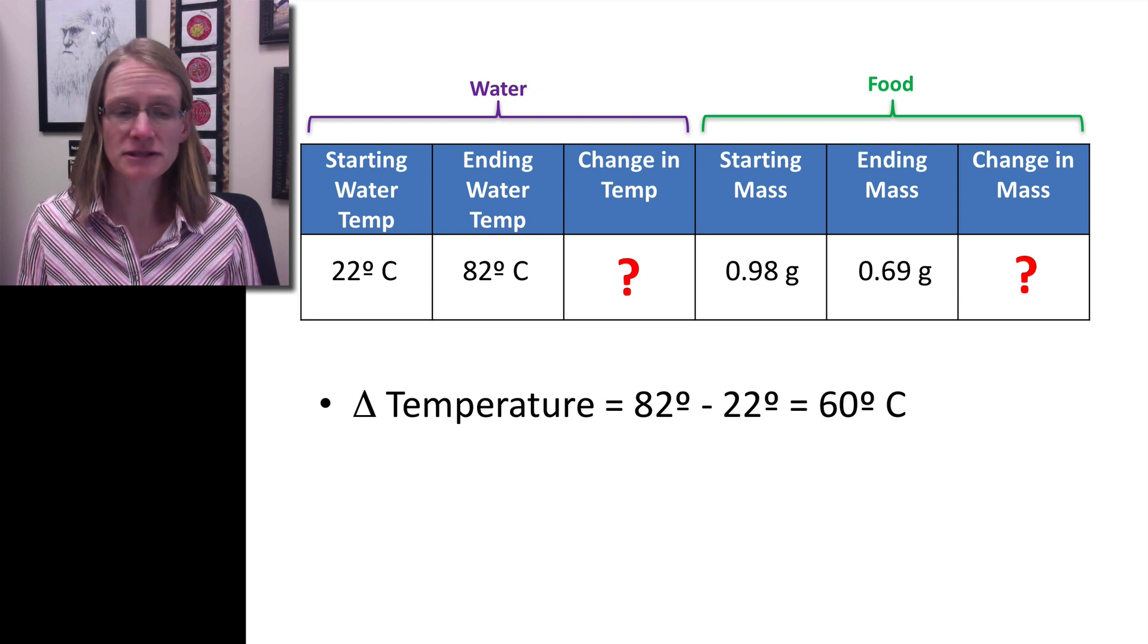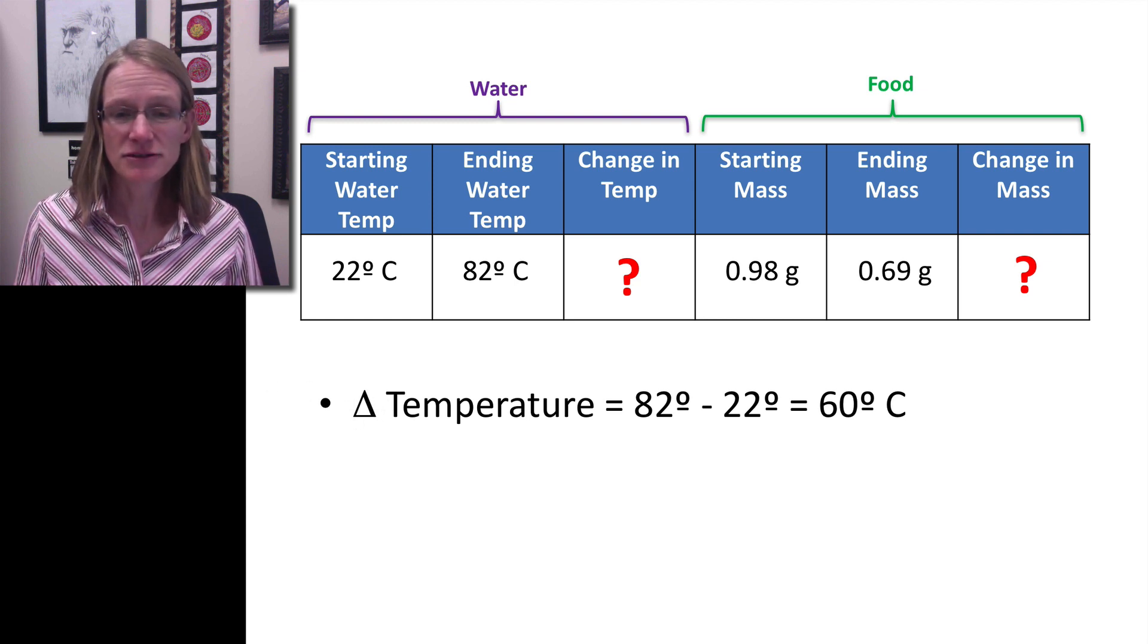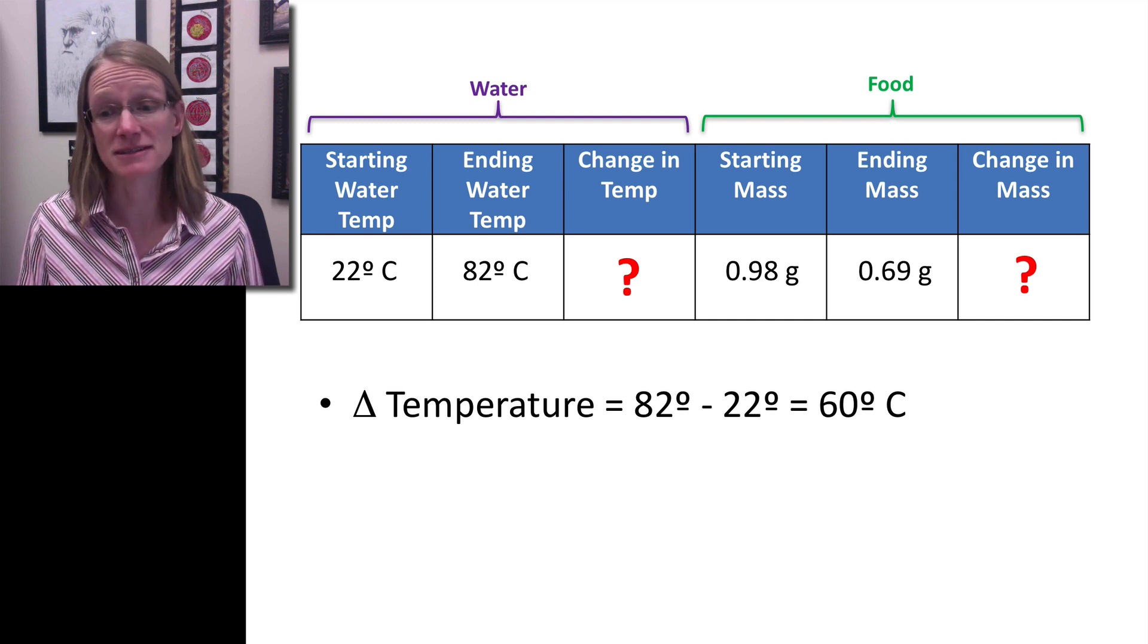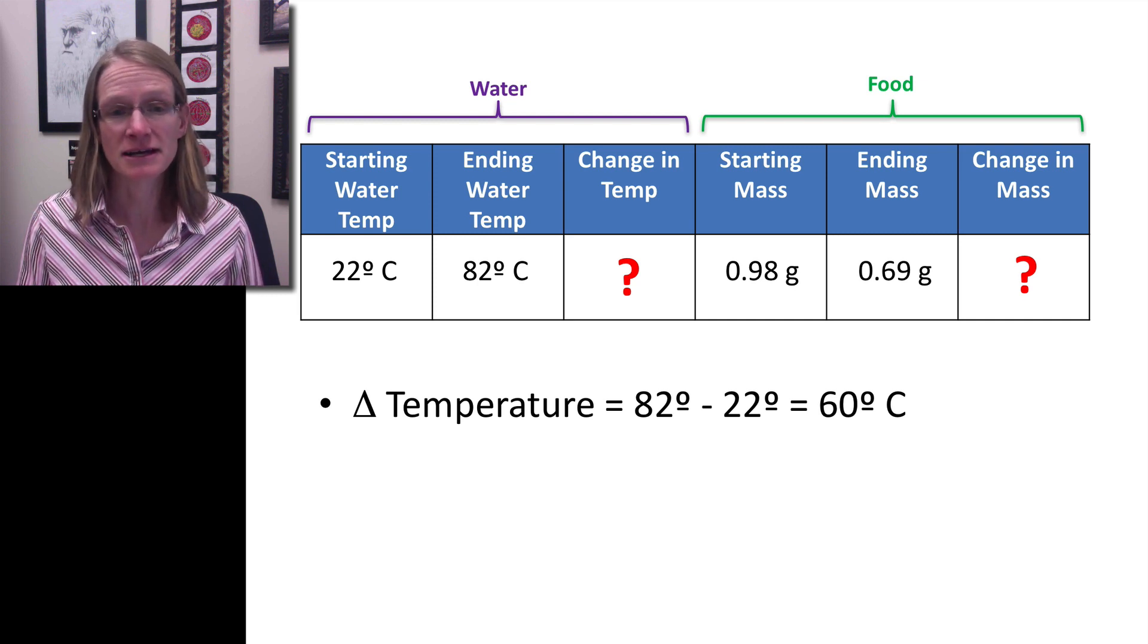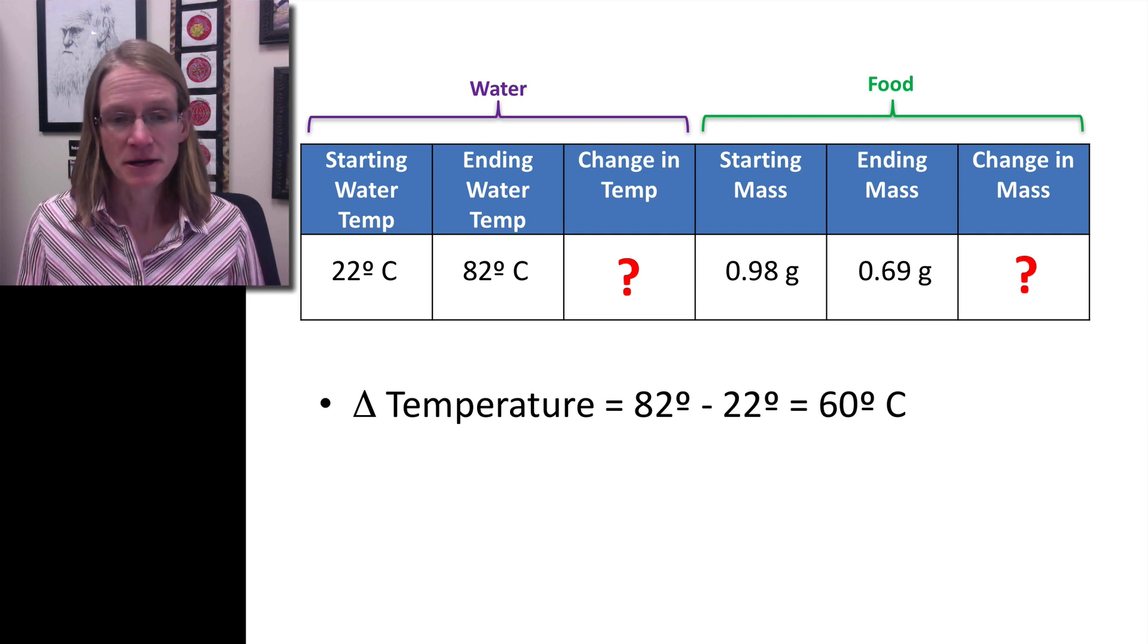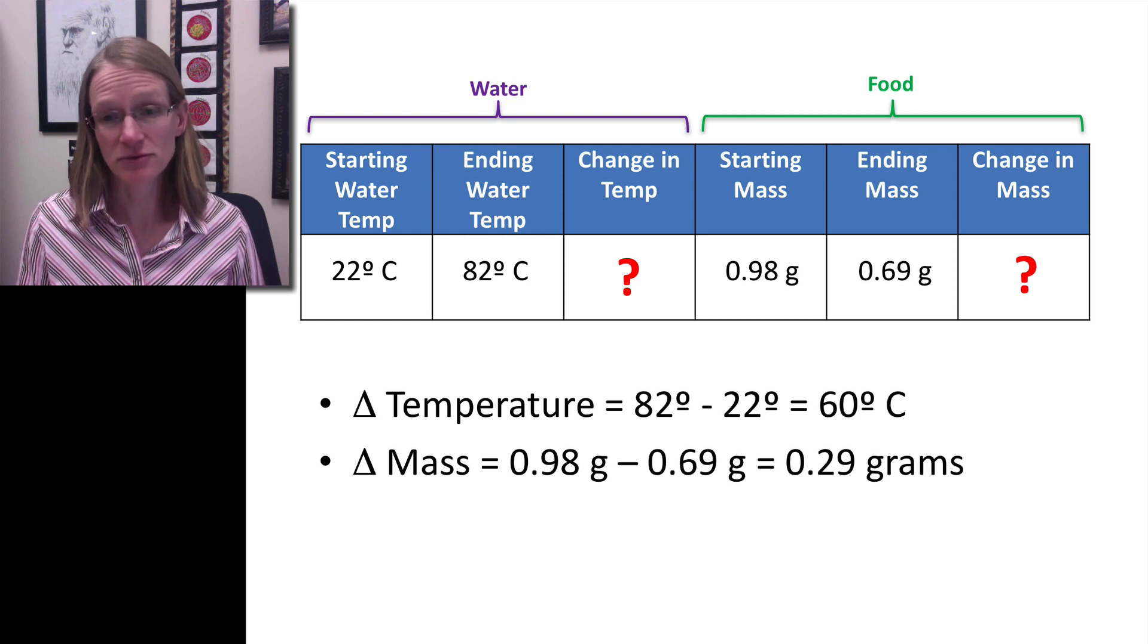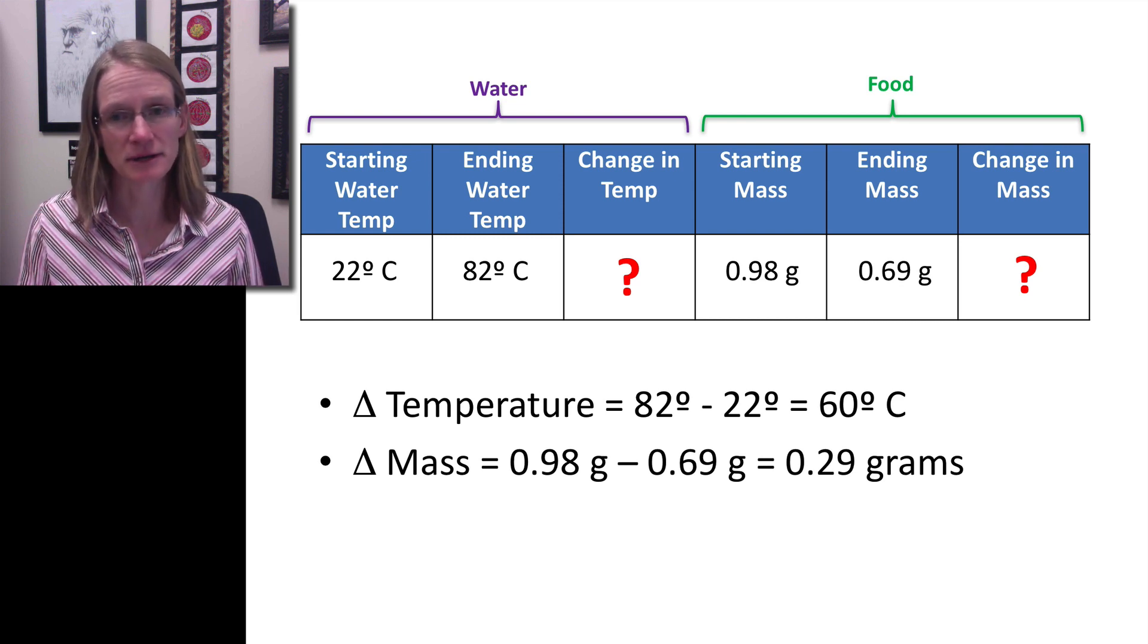And so the change, the symbol we have here, this little triangle, just simply represents change. This is the symbol delta. And so that change in temperature, we just take 82 minus 22 and that leaves us with 60 degrees C. And so we know that the water increased 60 degrees C. Whereas we can say, what happened to the mass of our food item? Well, we can just take those numbers 0.98 and take away 0.69, and we actually reduced 0.29 grams.